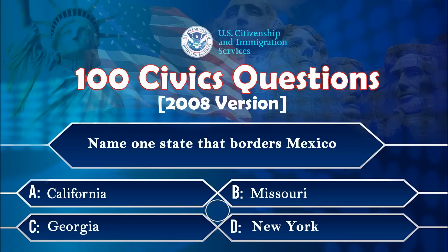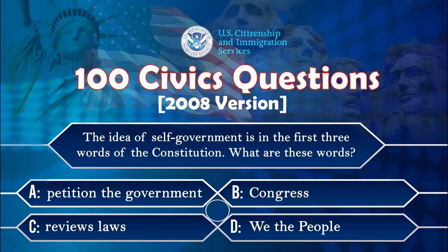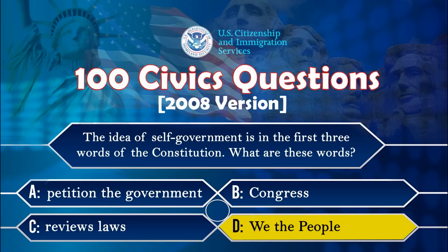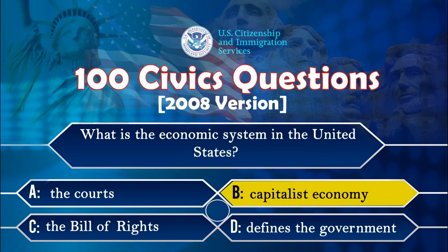Name one state that borders Mexico. California. The idea of self-government is in the first three words of the Constitution. What are these words? We the people. What is the economic system in the United States? Capitalist economy.